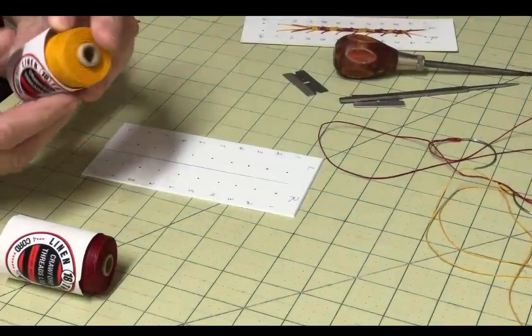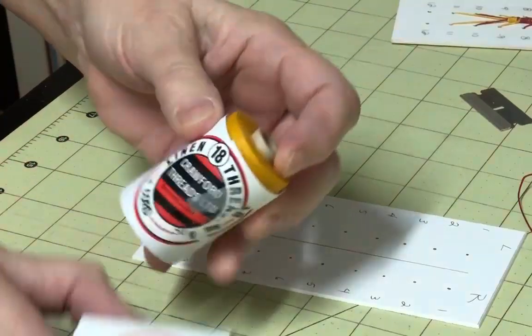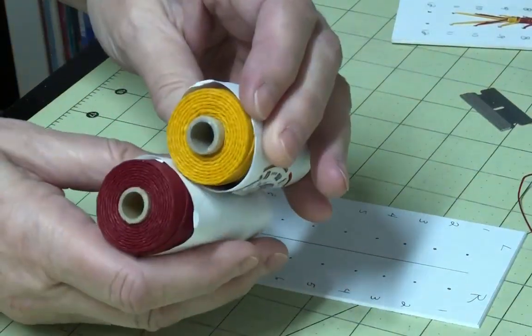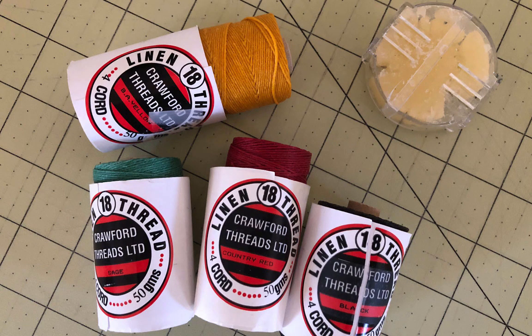I would suggest you use waxed thread for this stitch, for at least two reasons. First, the waxed thread will help hold the various stitches in place as you move on to the next step. Secondly, you will start out with very long threads, and using waxed thread will keep it from getting too tangled. You can wax your own thread or buy it pre-waxed.